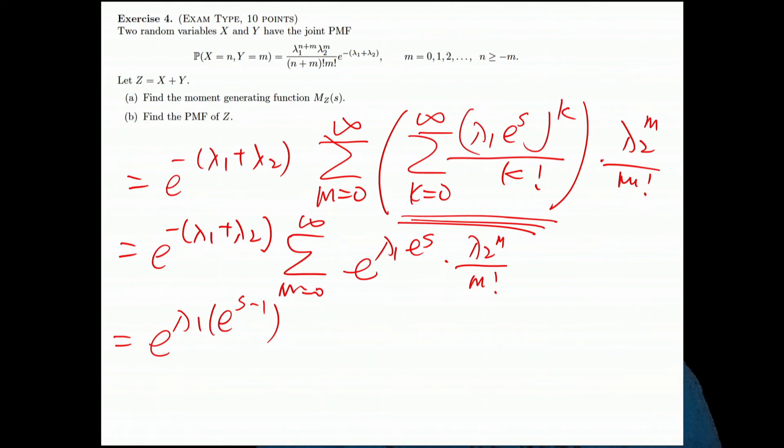Finally we find the moment generating function in this form. So this form is Poisson, so z is a Poisson random variable.